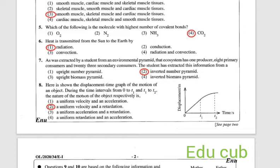Sixth one: heat is transmitted from the sun to the earth by? Answers are radiation, conduction, convection, radiation and convection. We can select easily. The answer is radiation, first one.